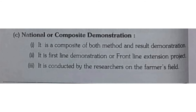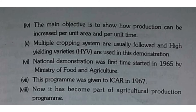The next is national or composite demonstration, which is a mixture of both method and result demonstration. It is also called a front-line demonstration or front-line extension project. It is conducted by researchers on the farmer's field. The main objective is to show how production can be increased per unit area per unit time.